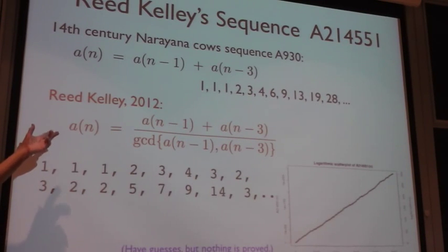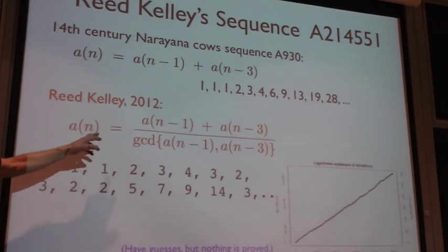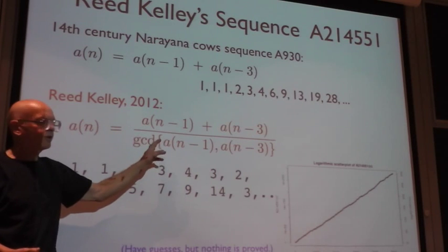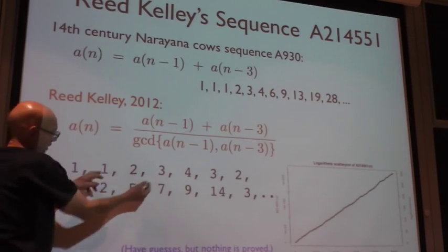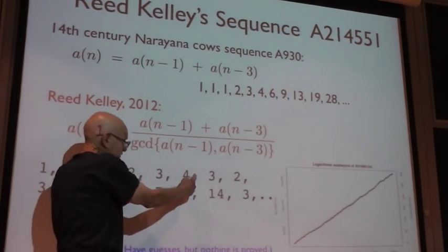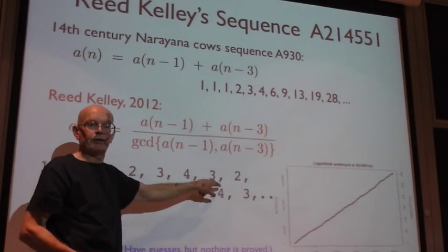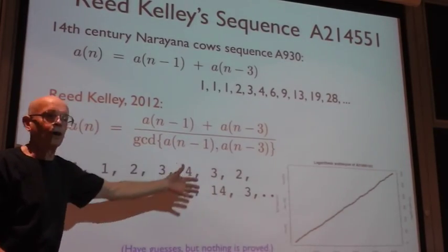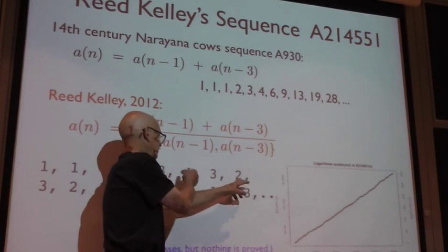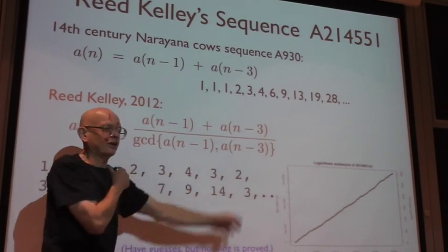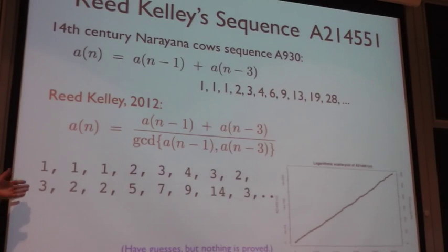That's sequence A930, easy to analyze. Last year Reed Kelly submitted a variation on this. You take the sum of those two terms but you divide by their GCD. So one, one, one, one plus two is three, one plus three is four, two plus four is six but we divide by the GCD which is two getting a three and so on. Three plus three is six divide by three because that's the GCD and we get two and so on.